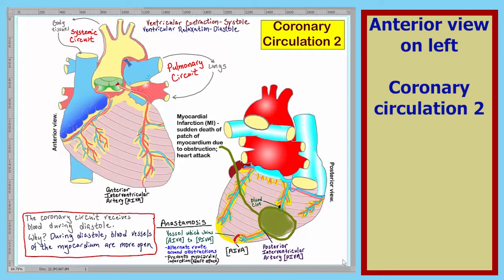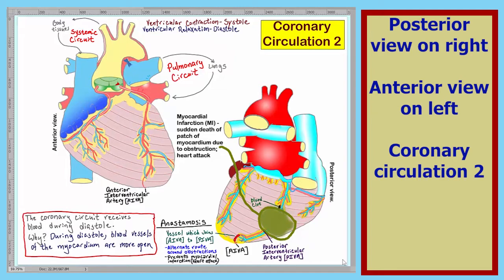Shown here on the left is our anterior view of the heart, and on the right, our posterior view of the heart. On this slide is all the annotation from the last lecture. To distinguish this annotation from the new annotation, we will change the color.